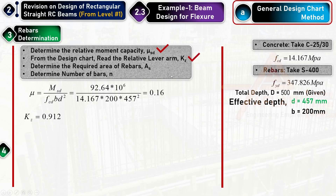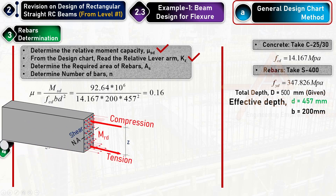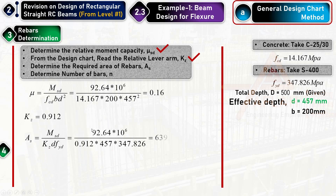The area of steel is calculated as As = M / (kz × d × fyd), where z = kz × d is the lever arm distance between the compression and tension resultants. Substituting the values gives As = 639.2 mm². The chosen bar diameter is Ø20.